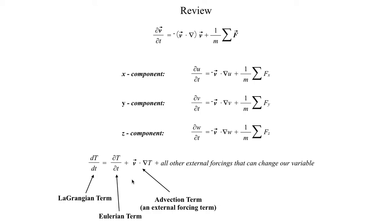Something important to keep in mind is the difference between a Lagrangian and Eulerian framework. In a Lagrangian framework, we use the total derivative — the lowercase d on the left-hand side — which accounts for pretty much everything. The Eulerian term is the local change. Lagrangian is for following something that's in motion; an Eulerian term is for a fixed point, represented by the partial derivative.